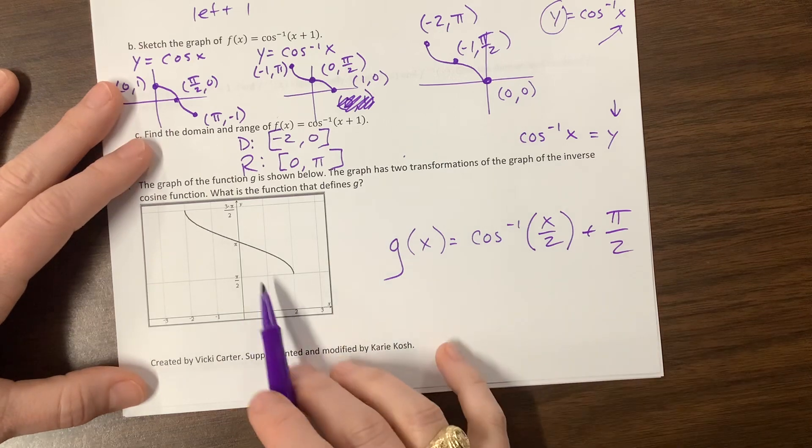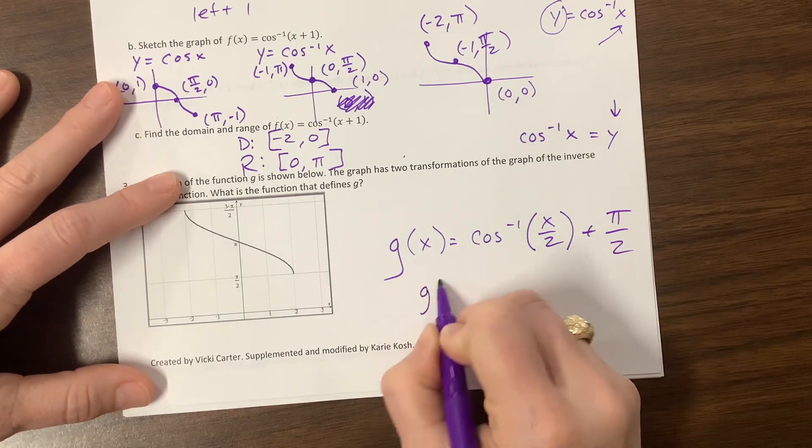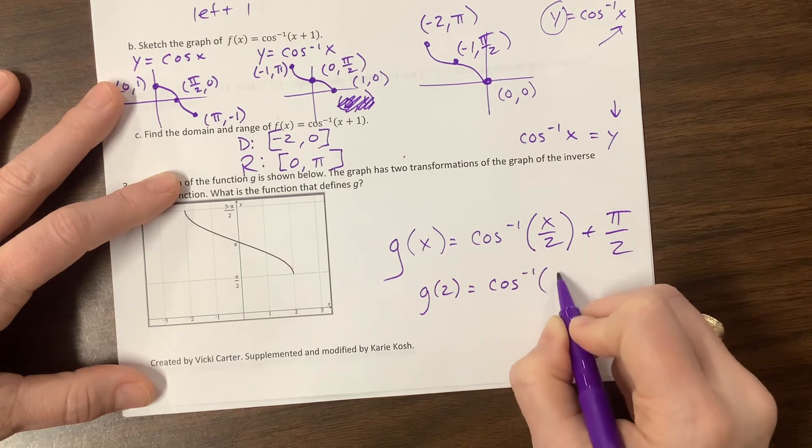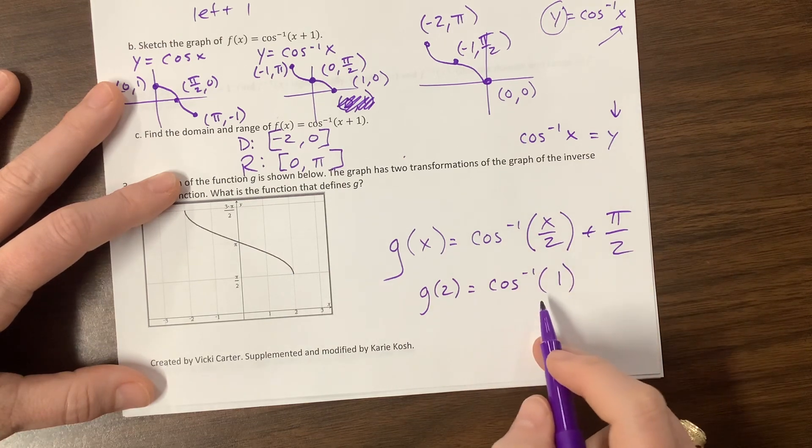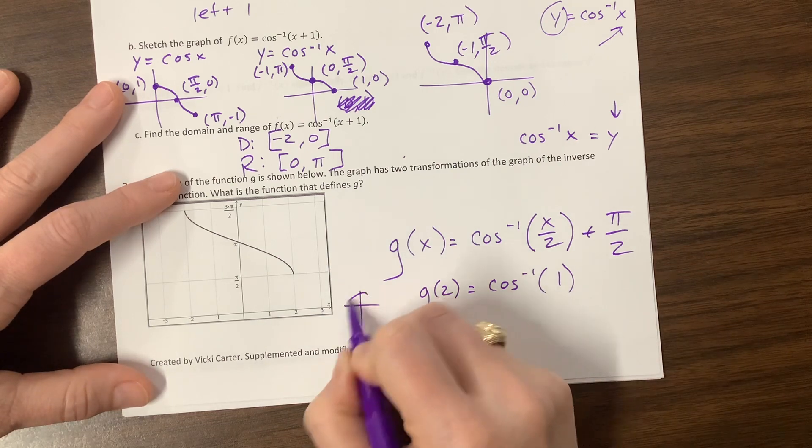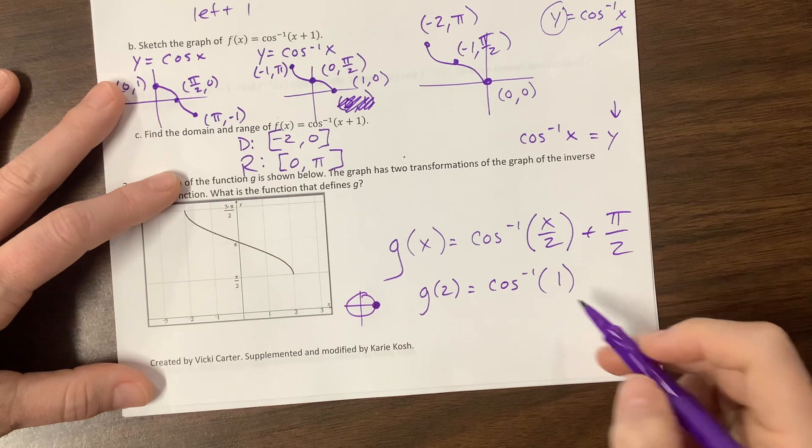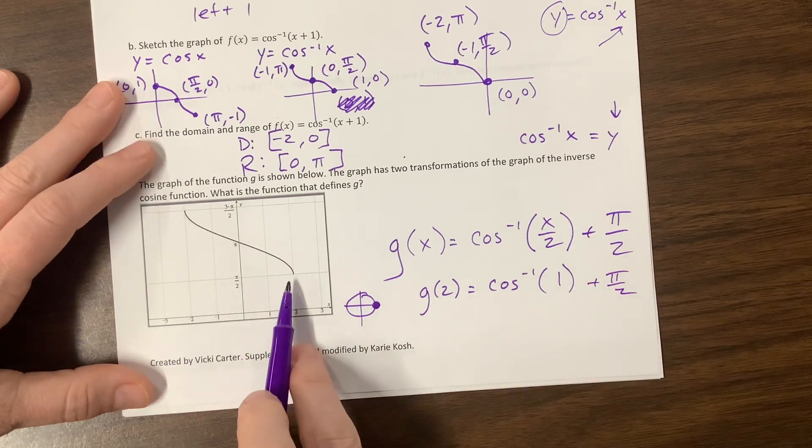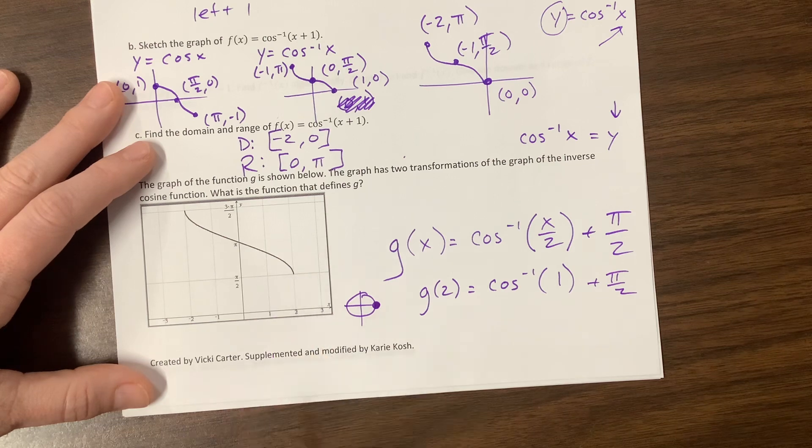Okay, so let's just double check. Let's plug in 2. So g of 2 is going to be cosine to the negative one of 2 over 2 is 1. Inverse cosine of 1. So if I think unit circle, cosine, the cosine value on my unit circle is equal to 1 at 0. Okay, so 0 plus pi over 2 is going to be pi over 2, which is right here, which is a good sign.